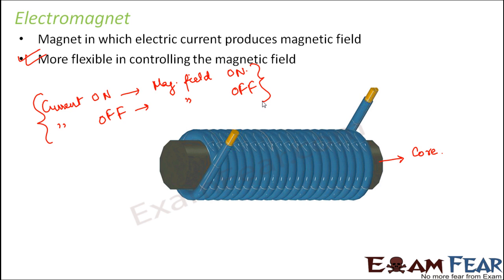Electromagnets also have advantages over normal permanent magnets. Permanent magnets do not make use of the magnetic effect of electric current, and each one produces a specific, fixed amount of magnetic field. We have no control over the amount of magnetic field produced by permanent magnets. With electromagnets, by simply changing the current we can change the magnetic field, which is why electromagnets are widely used.